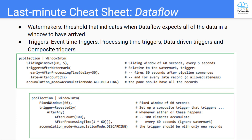So use triggers to modify and refine the windowing strategy for this situation. Beam provides event time triggers, which operate on the event time; processing time triggers, which operate on the processing time; data-driven triggers, which operate by examining the data as it arrives in each window and firing when the data meets a certain property — currently only supporting firing after a certain number of elements; and composite triggers, which combine multiple triggers in various ways.